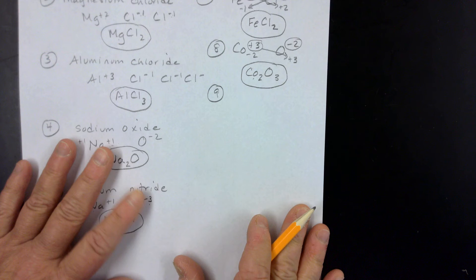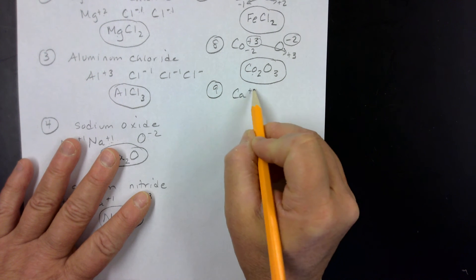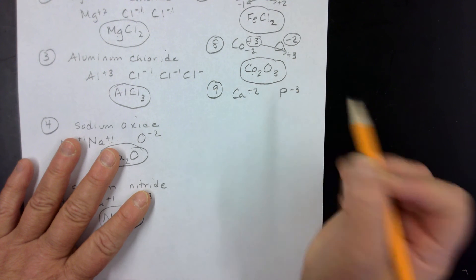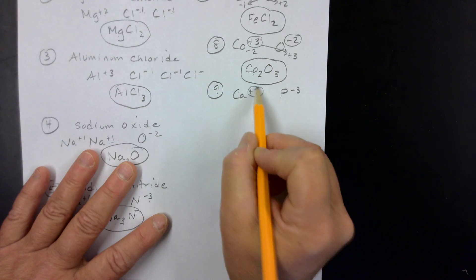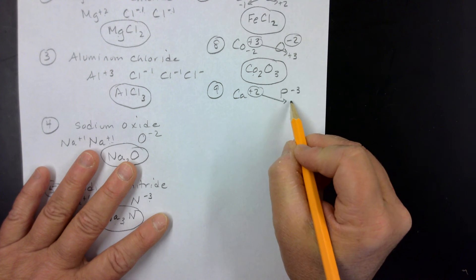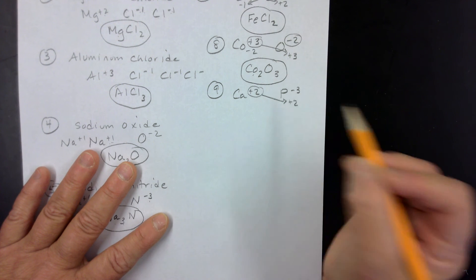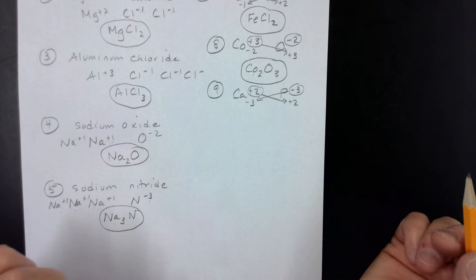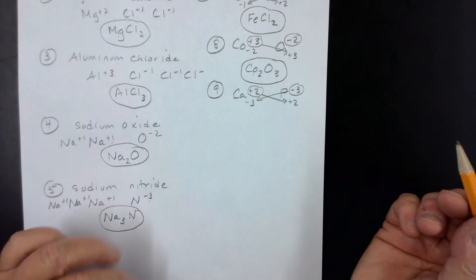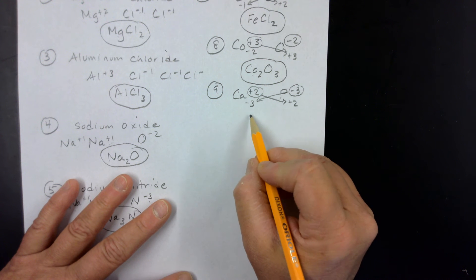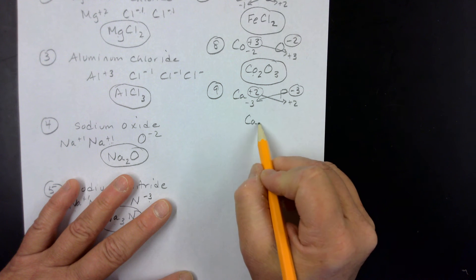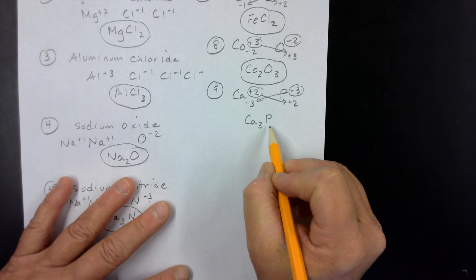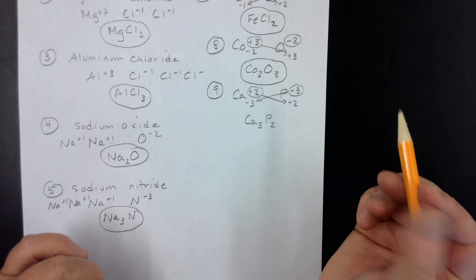Example nine: Ca plus two and P minus three. Using crisscross drop and swap, the negative three becomes the subscript on the cation. Drop any charges, and we have a ratio of three calciums to two phosphides: Ca₃P₂.